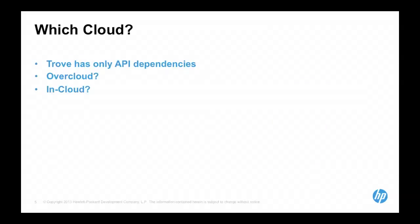Which cloud do you choose to run Trove in? Trove is unique — it's got only API dependencies to all other services. We can run it in the OverCloud, which is essentially the Triple O term for the bare metal OpenStack control plane deployment. We can also deploy it InCloud, since we can just point to the public URLs for the various OpenStack services we depend on. At HP, we've decided to run it in cloud — we stand up VMs and run the entirety of Trove within the cloud. This helps us because the guest agent in the customer instance needs connectivity back to our control plane, and having the control plane at the same level as the database instance helps with that connectivity.